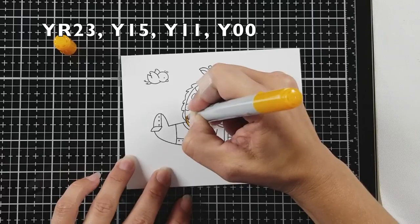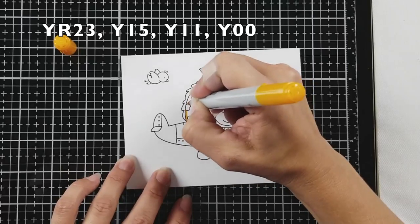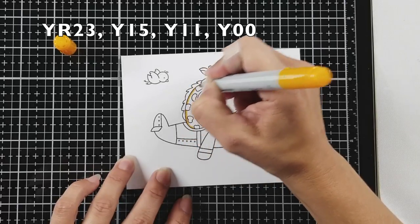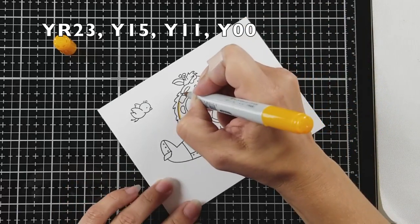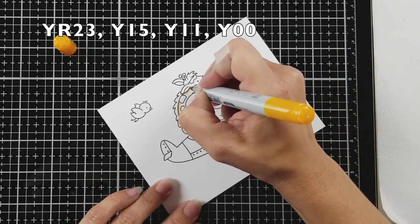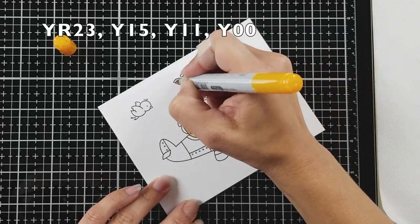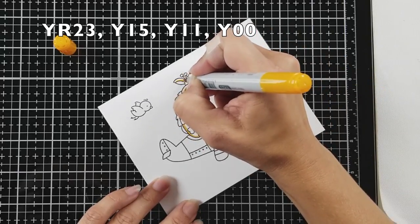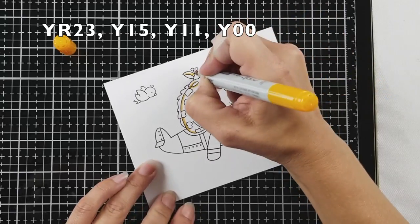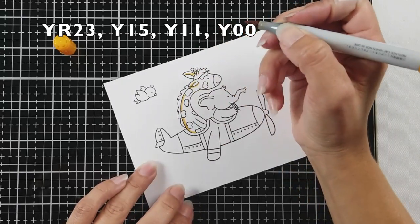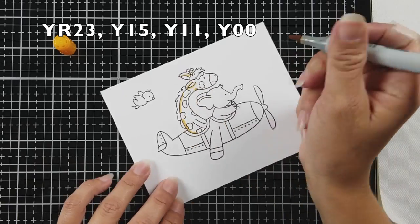So I'm starting out by doing my Copic coloring for the image. I'm using Neenah Solar White 80 pound cardstock. This is my personal choice. I really love how the color soaks into the cardstock. I know some people don't as it may take more ink than other cardstocks but I really like it. I like the blending of it.